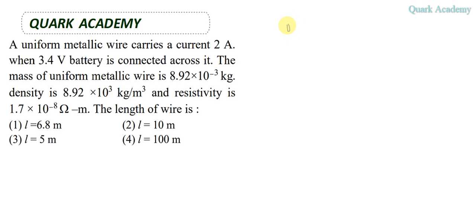A uniform metallic wire carries a current of 2 amperes when connected to a 3.4 volt battery. Given current I = 2A and voltage V = 3.4V, we can use this to find the resistance.